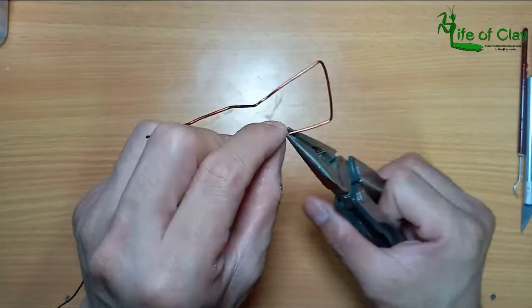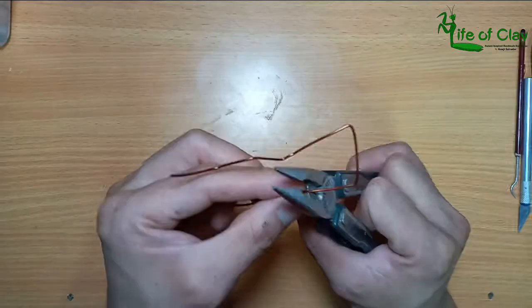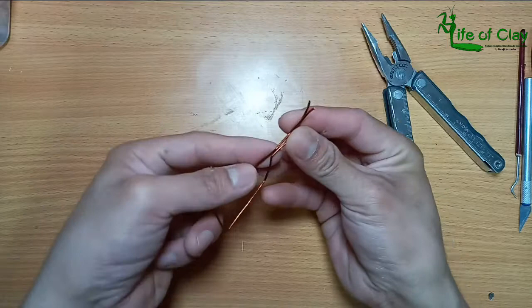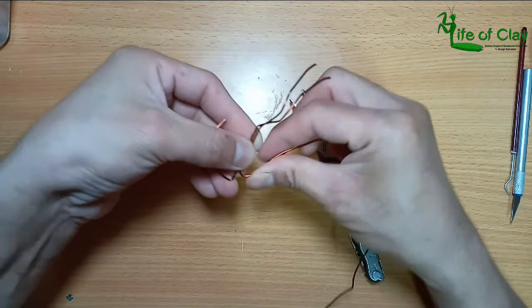I used bronze wire for his armature and I started trimming and bending it. He has two uneven length arms, three legs and two leaves on his head.